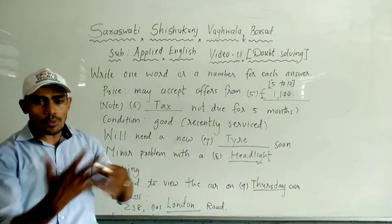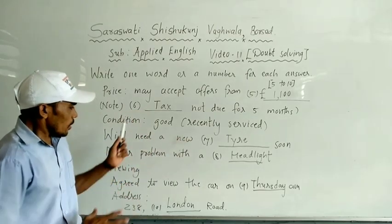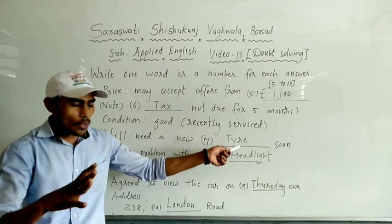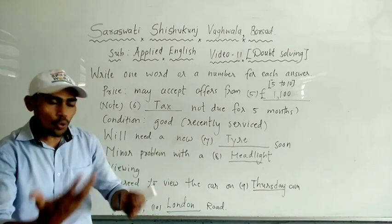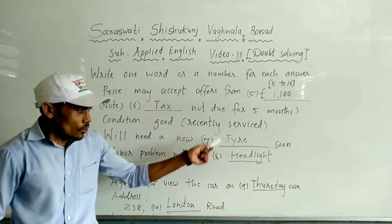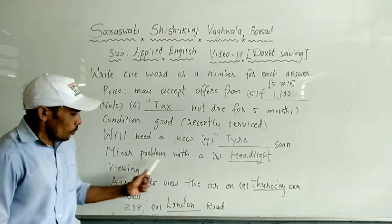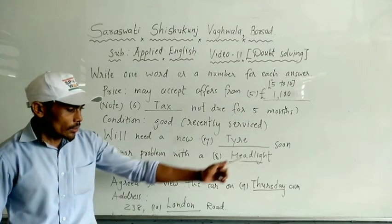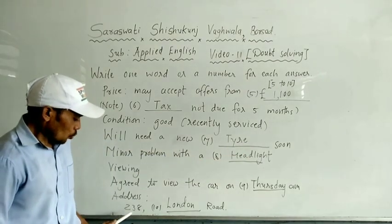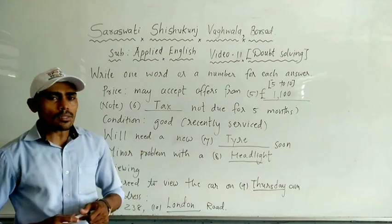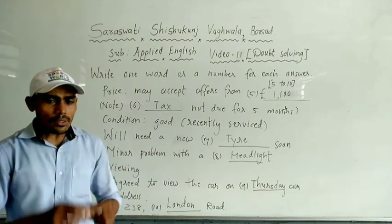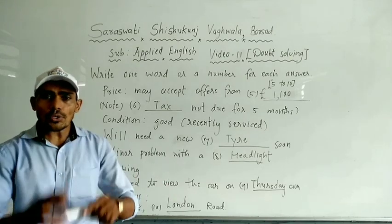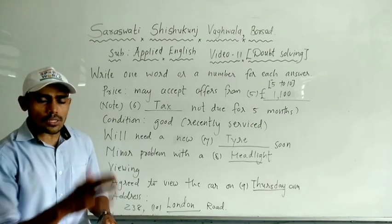Price may accept offer - so it is regarding price, there should be a particular number. Note, tax not due for blank months. Condition, recently serviced. Will need a new blank - that means there is something, a noun, because 'new' is an adjective. So grammar also plays a role when you do listening. Minor problem with blank headlight. Agreeing to view the car on Thursday AM. Address, 238 London Road. I have written my answers and we are going to discuss what answers are supposed to be.